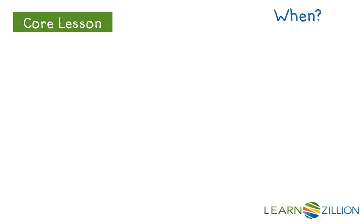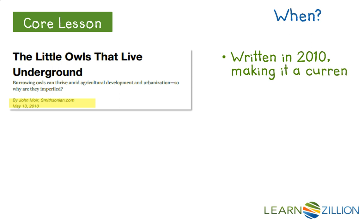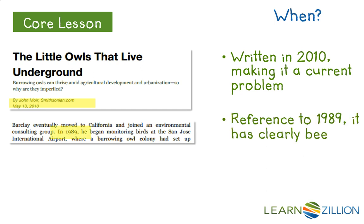Next, we're going to ask when. When is this problem occurring? Right at the top, I see where and when the article was published — it was published in 2010, so we know it's a current problem. But if we look deeper in the text, we see it's been going on for years, at least since the 1980s. So habitat destruction has been a problem for a while — can we save them, will we save them?